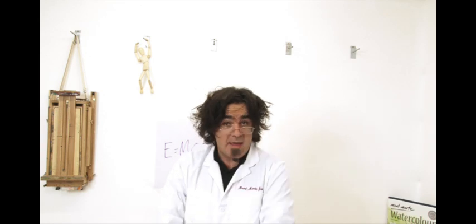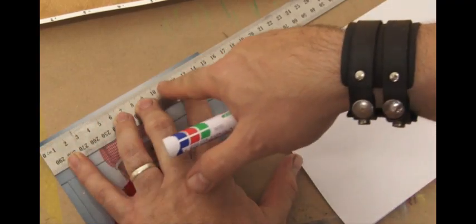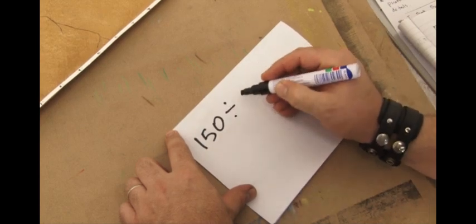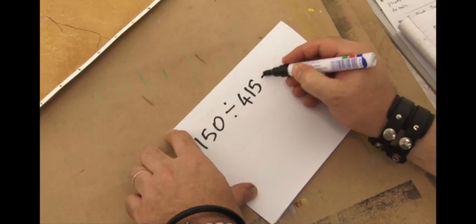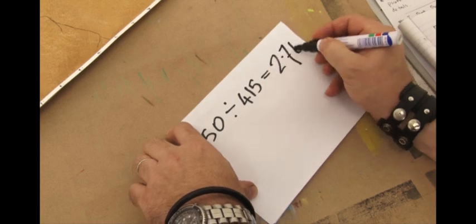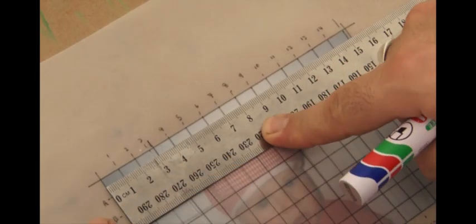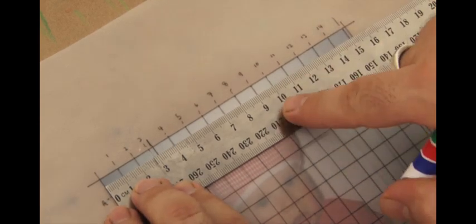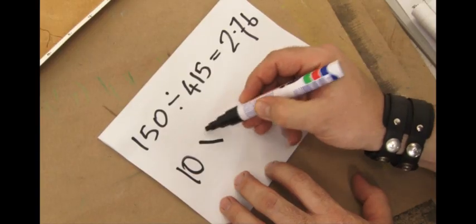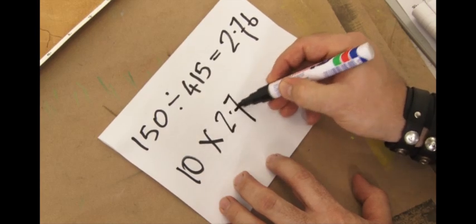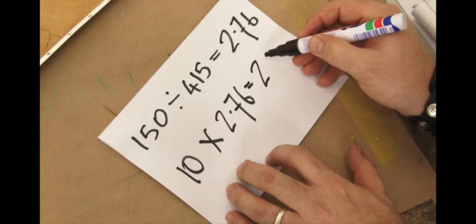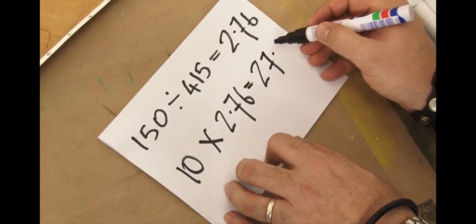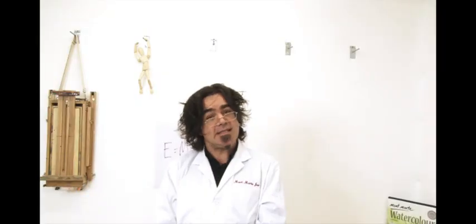At this point I have to get all mathematicianist and I have to apply a formula to work out the enlarged grid size. So I measure my original photo which is 150 millimeters and divided by the proposed artwork size which is 415 millimeters which equals 2.76. I now measure the individual size of each square on the original which is 10 millimeters and then multiply it by 2.76 which equals 27.6 millimeters. That is how big each individual square will have to be on my proposed artwork. Easy hey? We have supplied this formula on the PDF.